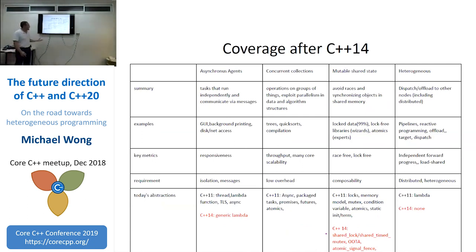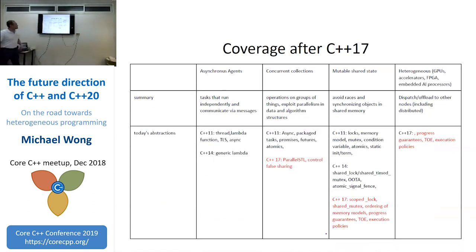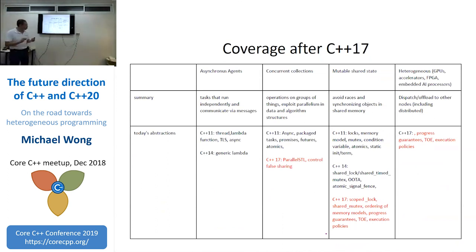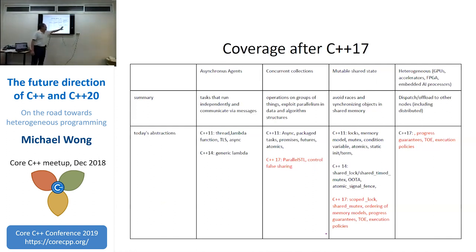C++14 was a minor release. We added polymorphic and generic lambdas, and fixed some things in the memory model around thin air values. C++17's big addition was parallel STL — the ability to dispatch STL algorithms in parallel and in parallel-vector mode using an execution policy parameter. We also allowed control of false sharing. For mutable shared state we added store locks and shared_ptr. The most important foundation added was progress guarantees, thread of execution, and execution policy.